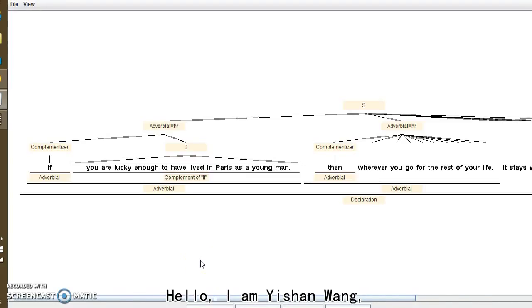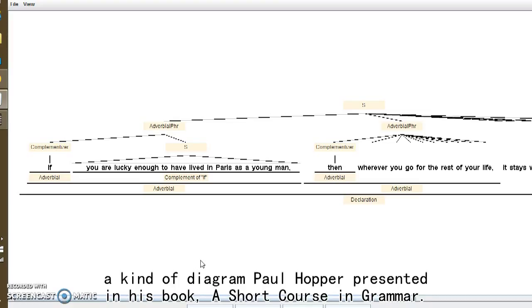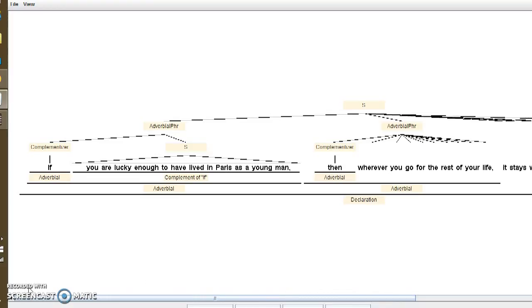Hello, I am Yishan Wang, presenting my diagram in class Rhetorical Grammar. In this video, I am going to parse a sentence using a form function diagram, a kind of diagram Paul Hopper presented in his book, A Short Course in Grammar.